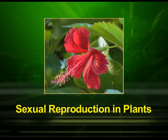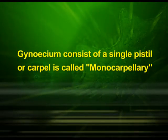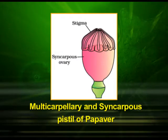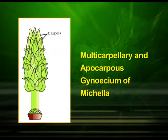Now let us start with the next part of the topic: sexual reproduction in plants. The gynoecium represents the female reproductive part of the flower. When the gynoecium consists of a single pistil or carpel, it is called monocarpillary. When it has more than one pistil or carpels, it is called multicarpillary. When there are more than one carpels, the pistils may be fused together and called syncarpous, as shown in the diagram of the multicarpillary and syncarpous pistil of poppy. On the other hand, the multicarpillary pistil may be free and called apocarpous, as shown in the diagram of the multicarpillary and apocarpous gynoecium of the michella plant.